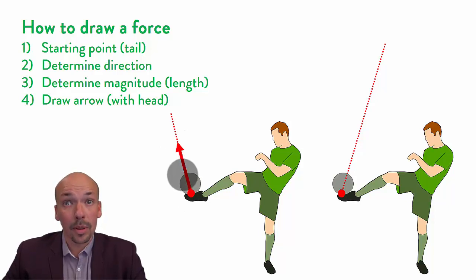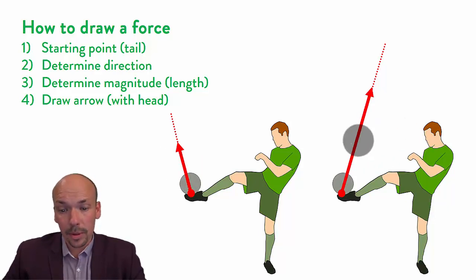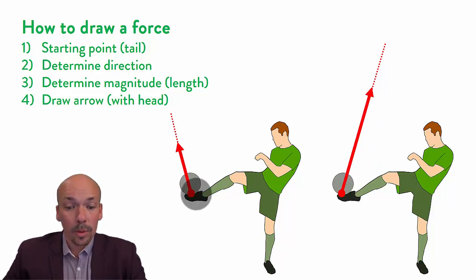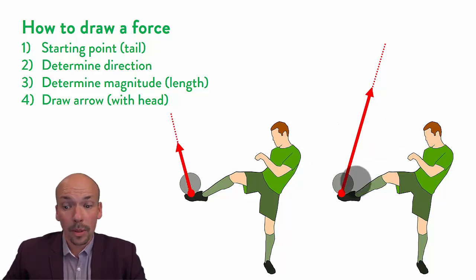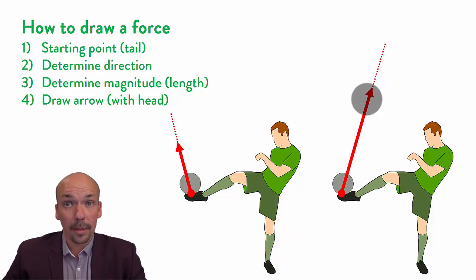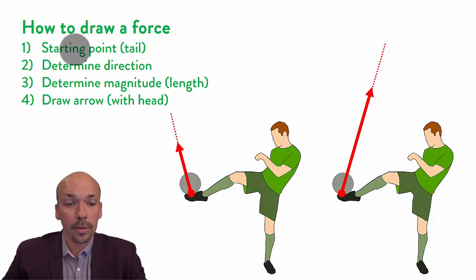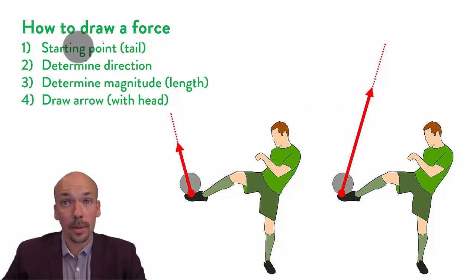Now you can see that this force is a lot smaller than this force. So this ball will be kicked to the left, and this one will be kicked to the right, and this one will go a lot further because there was a much bigger force. And these are the rules for drawing forces — these four steps are very important.